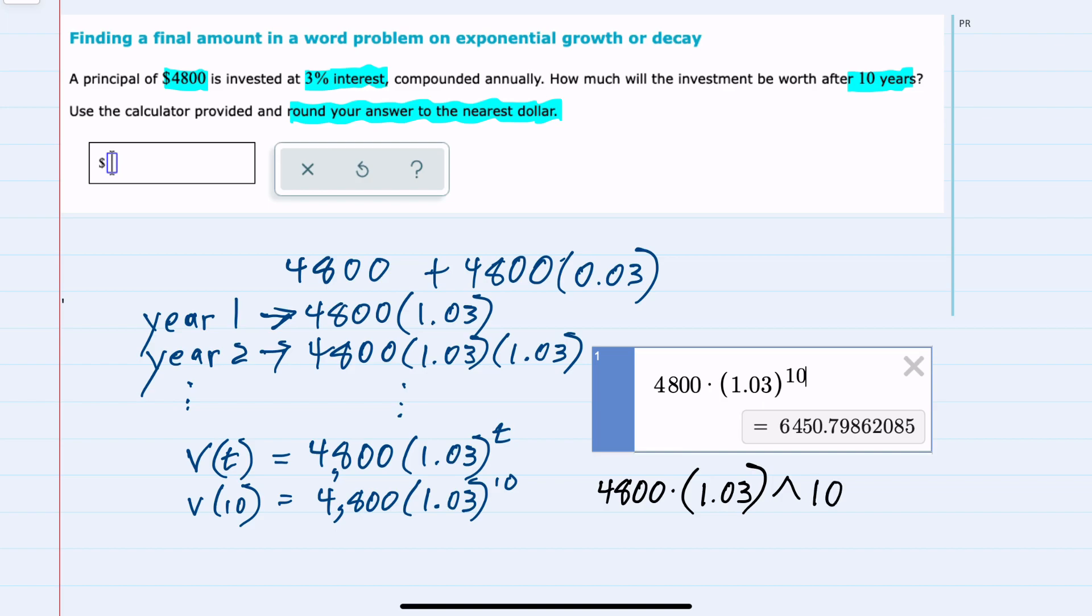Plugging that into Desmos, we want to round our solution to the nearest dollar, and since the next digit here is a 7, we would round up, so this would be $6,451 with that rounding.